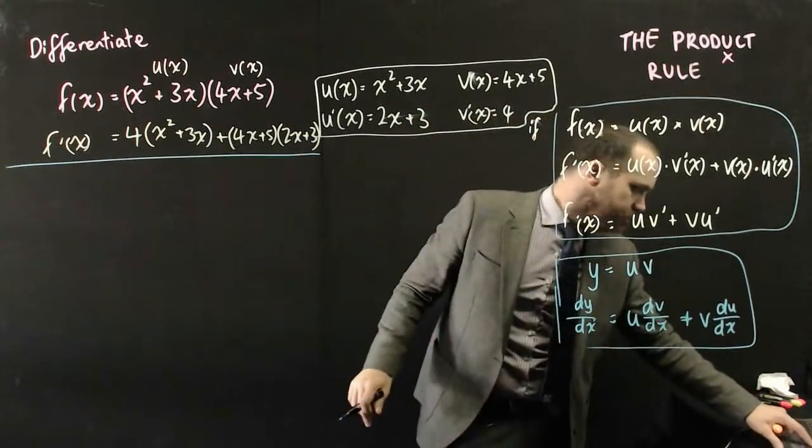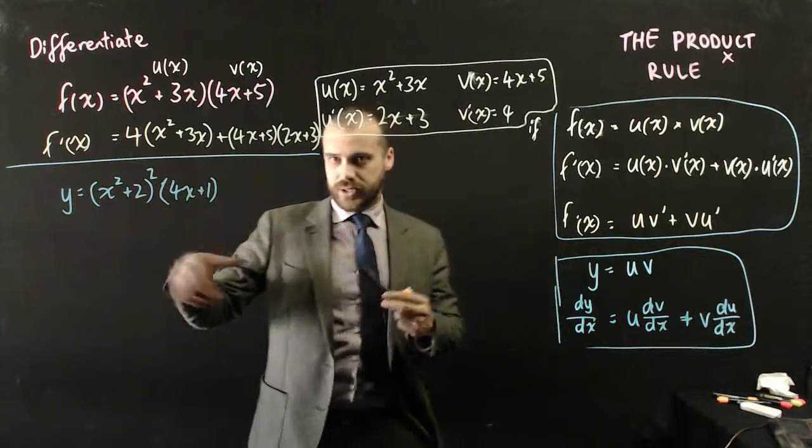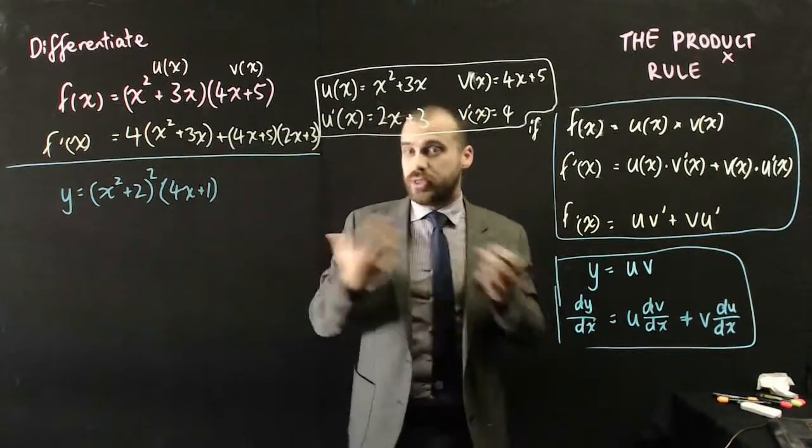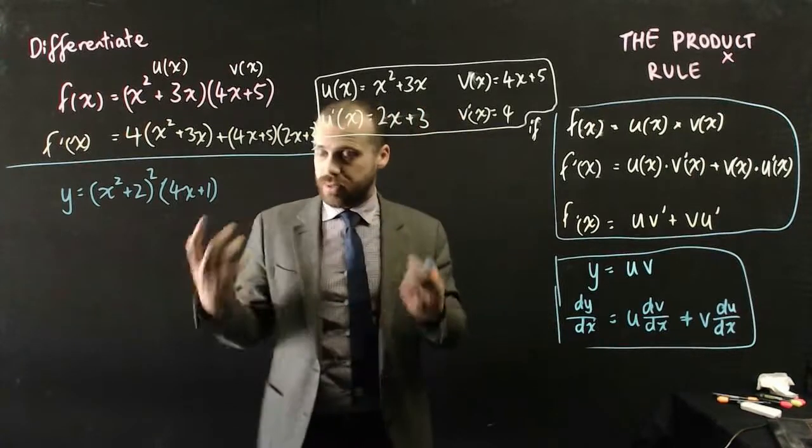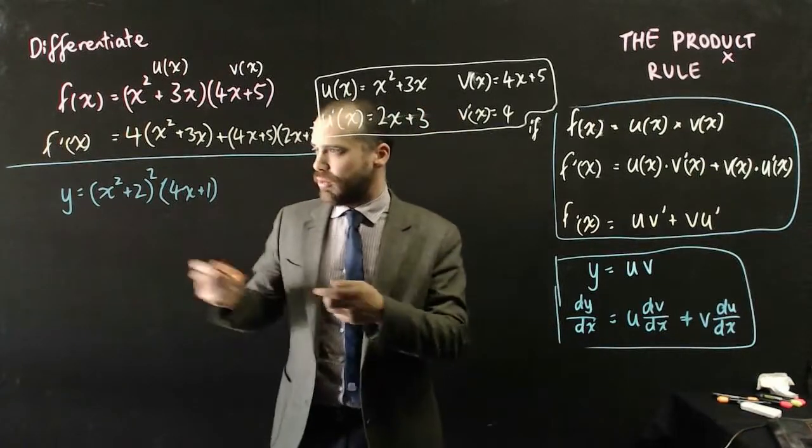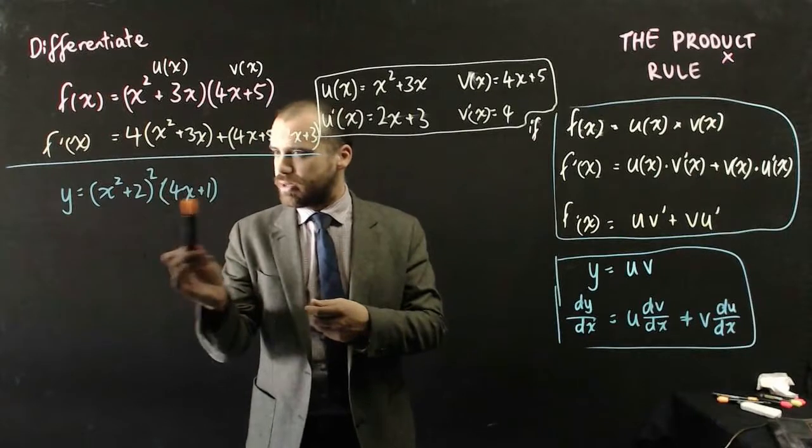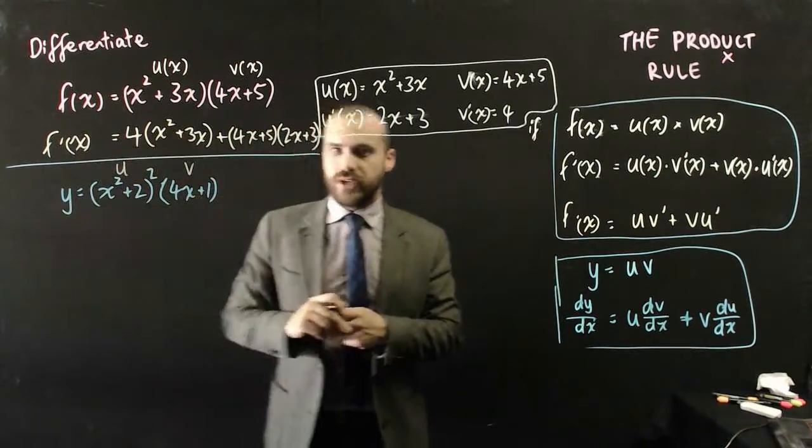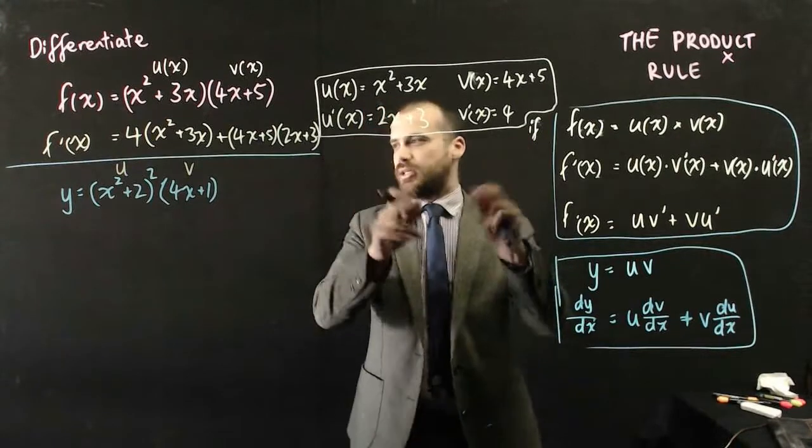All right, another question maybe? So here's another example, and this is where the product rule starts to work. Usually it's combined with the chain rule. What do I mean by that? Well, here's my function: y equals this times this. And so I'll call this bit u, and I'll call this bit v, and then I'll set to work making my little table here.